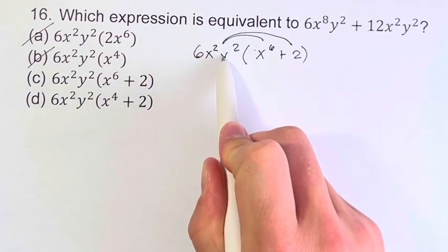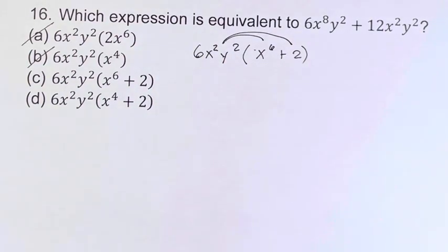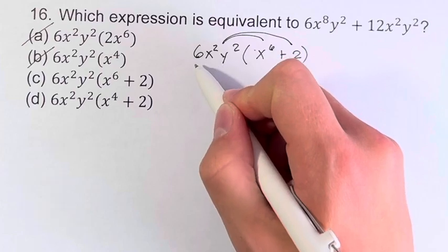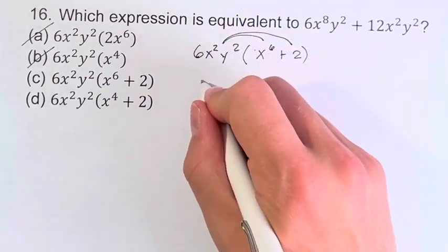So we have 6x squared y squared times x to the sixth. What is that going to look like? Well, the only constant here is 6, so that goes up front.